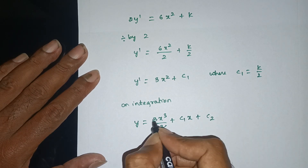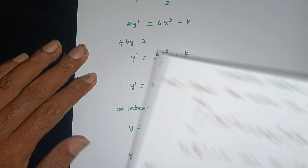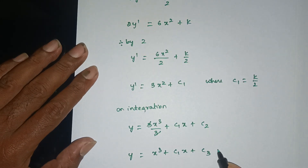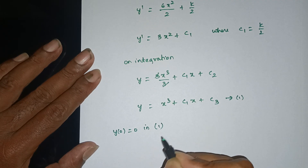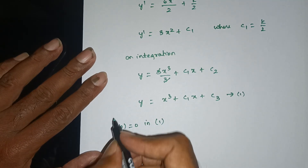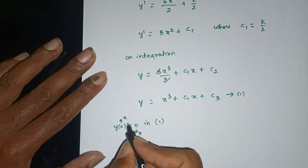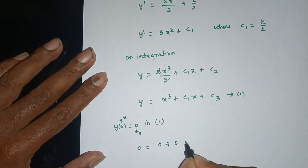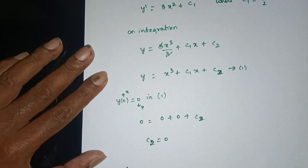Integrating y' gives y = (λ/2)·(x³/3) + C₁x + C₂, simplified as y = x³/(2λ) + C₁x + C₂. Applying boundary condition y(0) = 0: C₂ = 0. So equation 1 becomes y = x³/(2λ) + C₁x.